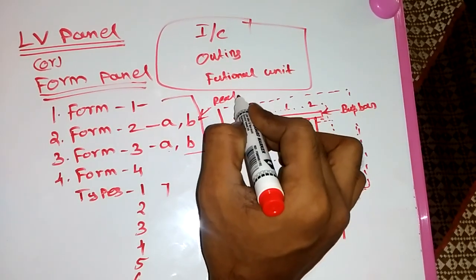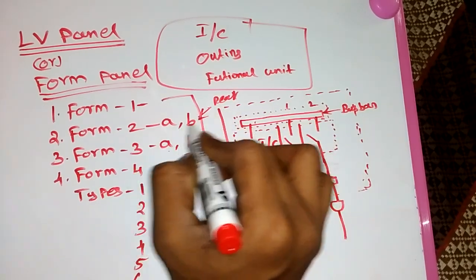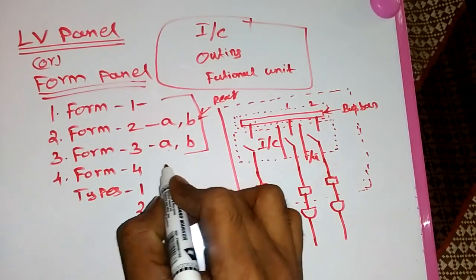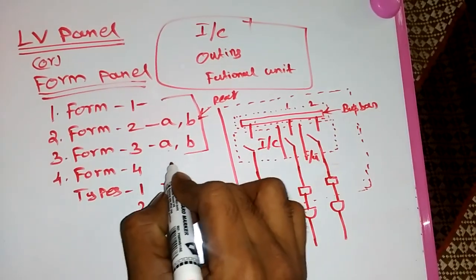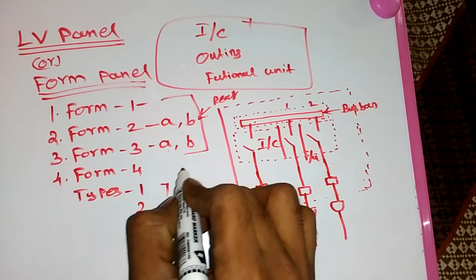In Form 3, same as before: bus bar not separate from terminals is called Type A; bus bar separate from the terminals is called Type B. Form 1, Form 2, and Form 3 are very rarely used in LV panels — these are very old versions.